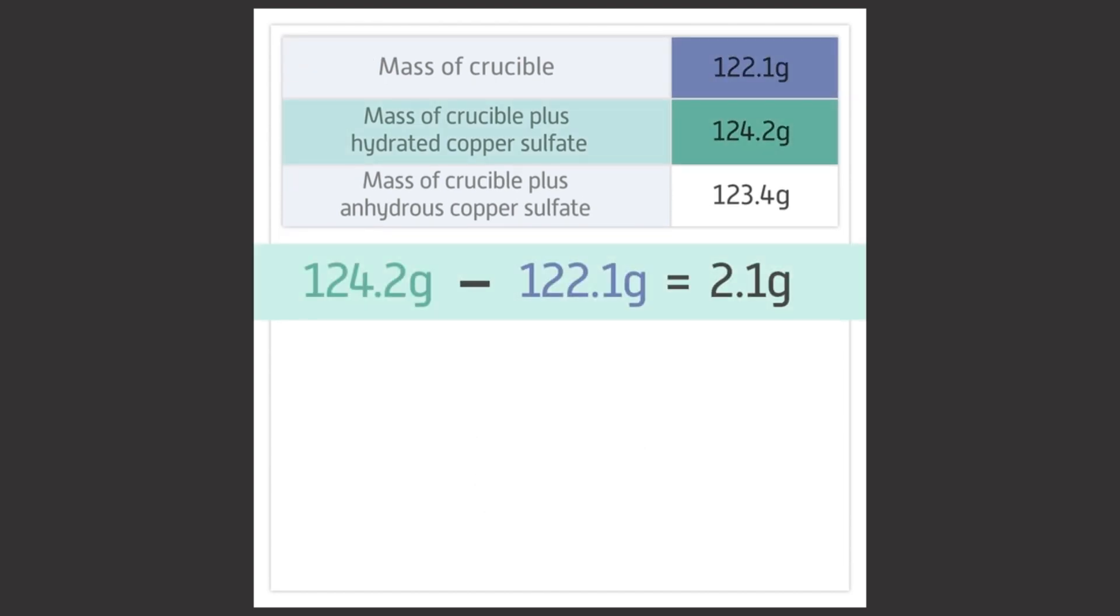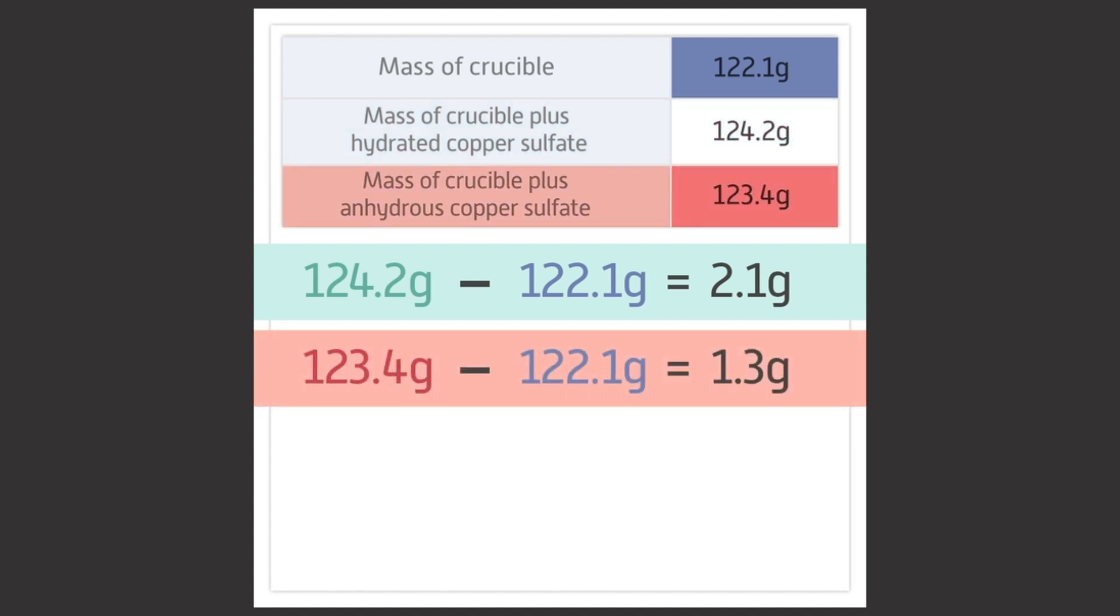First, work out the mass of the hydrated copper sulfate you heated. For this example, it is calculated as 124.2 minus 122.1 equals 2.1 grams. Then calculate the mass of anhydrous copper sulfate. This is 123.4 minus 122.1 equals 1.3 grams.